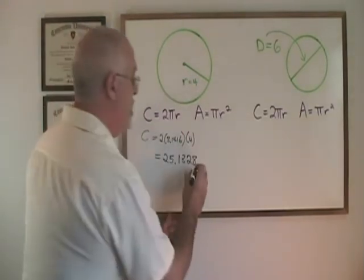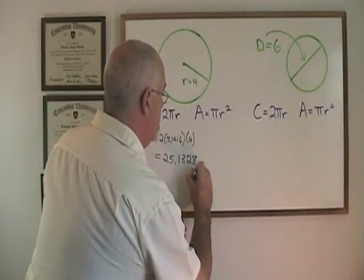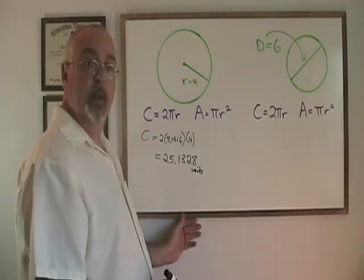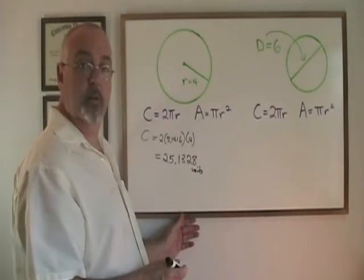We don't have a unit of measure so I will use the word units as my unit. The area formula is area equals pi r squared.